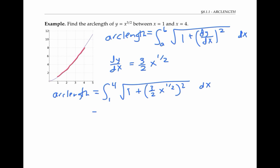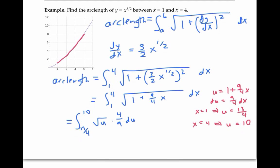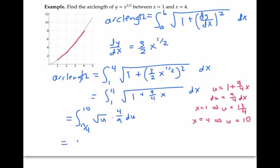After simplifying a little bit, we can use u-substitution to rewrite this. So we get the integral from 13 fourths to 10 of the square root of u times four-ninths du, which integrates to u to the three-halves divided by three-halves times four-ninths, evaluated between 10 and 13 fourths.